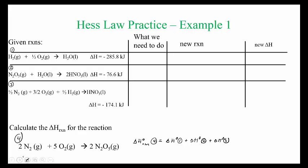I arranged everything in a chart to explain how this all comes together. You have to look at the target reaction and ask yourself: which of these do I need to reverse, and how do I make some of these cancel out so that the result equals the target reaction? Let's take a look — I notice there's hydrogen here, but no hydrogen appears in the final reaction, so it needs to cancel out. One of these reactions needs to be reversed.